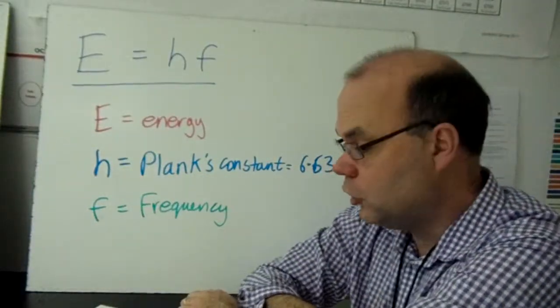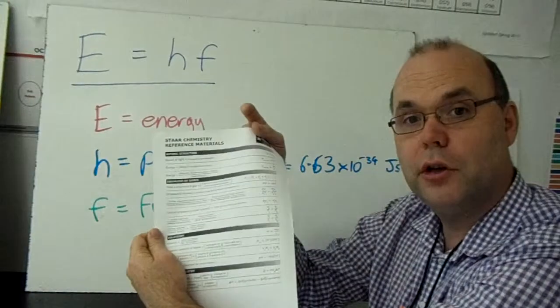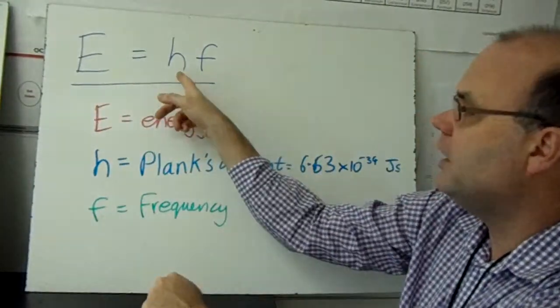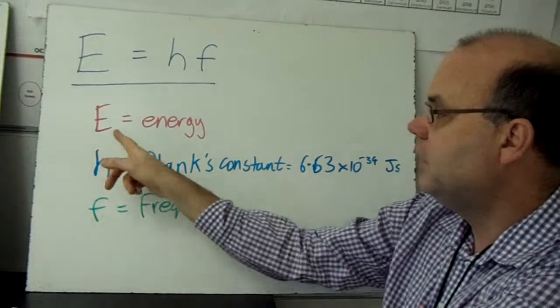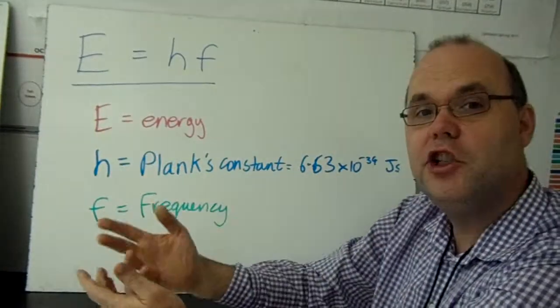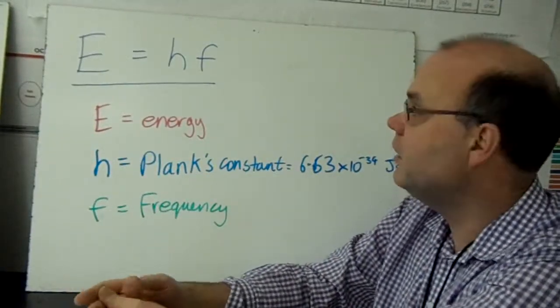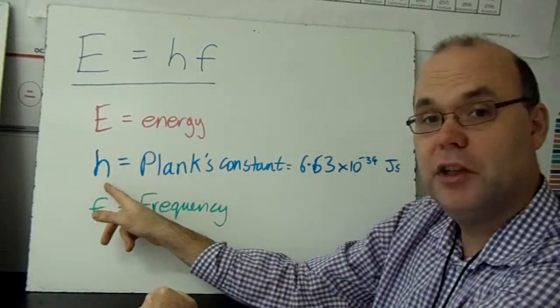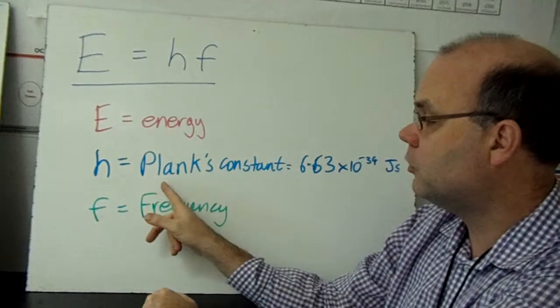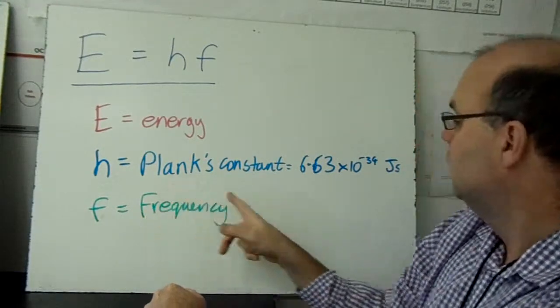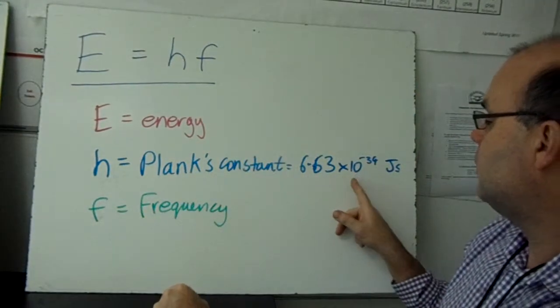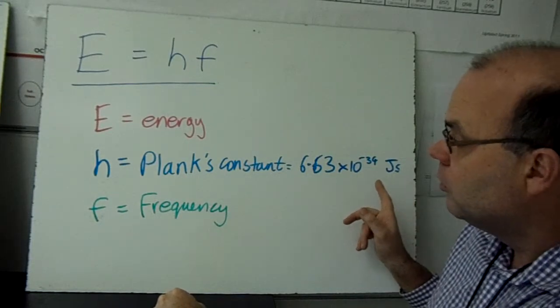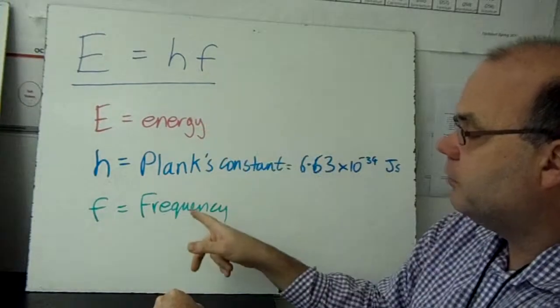Here's another equation. These equations are often on a formula chart. Energy equals HF. E is energy. This is the energy of a wave of a certain frequency. H is another constant, named after a guy called Planck, 6.63 times 10 to the minus 34 joule seconds. And F is the frequency.